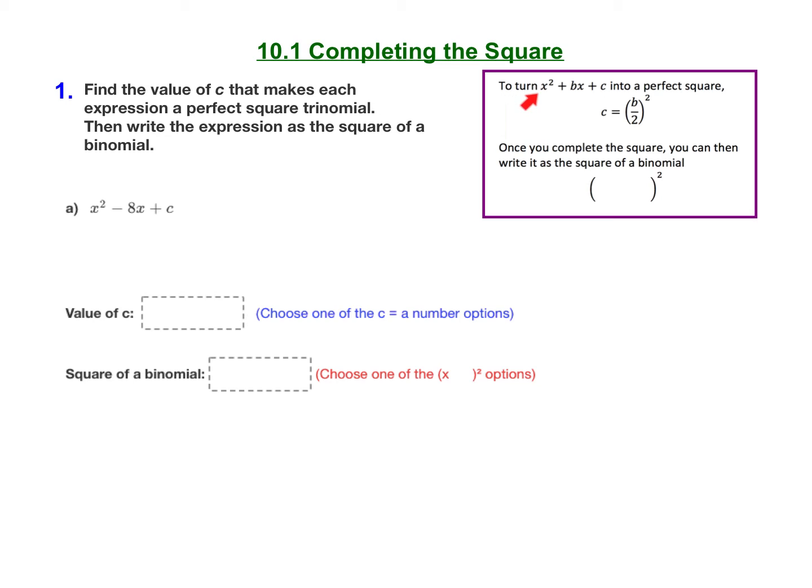Remember that to turn x² + bx + c into a perfect square, you take b divided by 2 and you square it. So our c value is b divided by 2 squared.